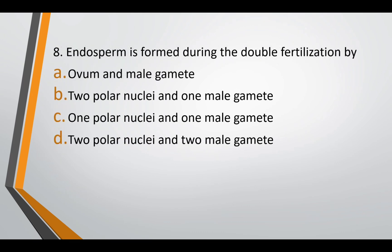Question eight: endosperm is formed during double fertilization by fusion of — option A: ovum and male gamete, option B: two polar nuclei and one male gamete, option C: one polar nucleus and one male gamete, or option D: two polar nuclei and two male gametes. The correct answer is option B — two polar nuclei and one male gamete. Since there are two polar nuclei (2N) and one male gamete (N), the fusion results in 3N.